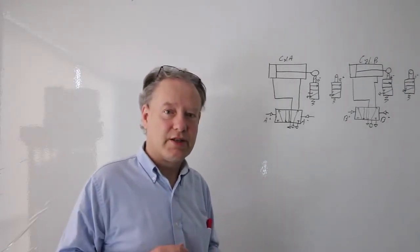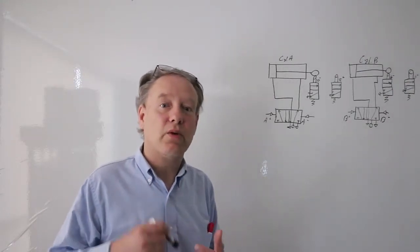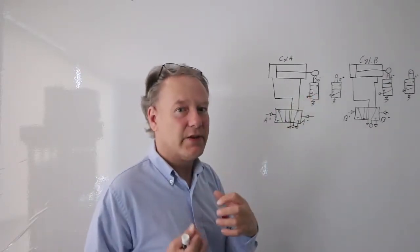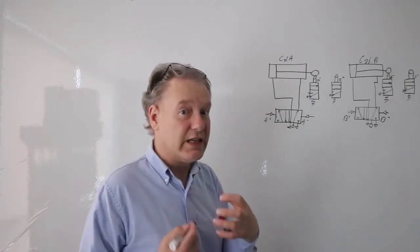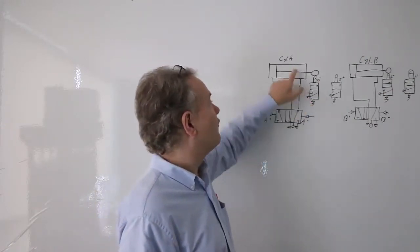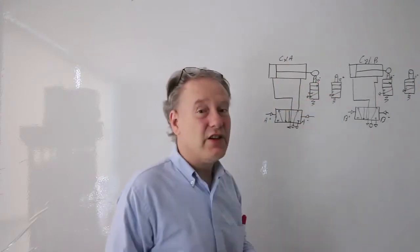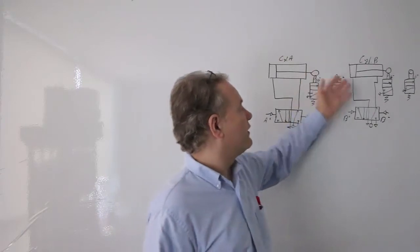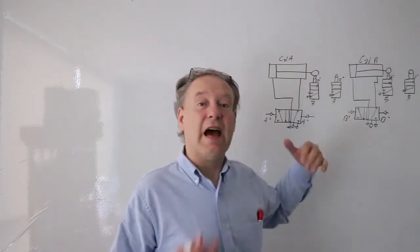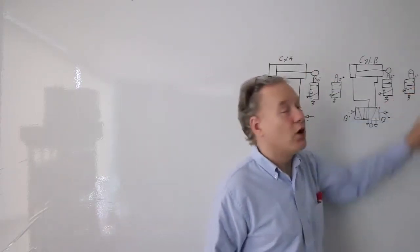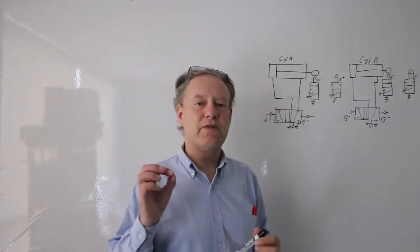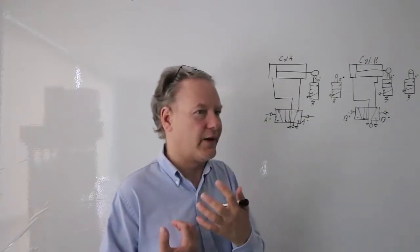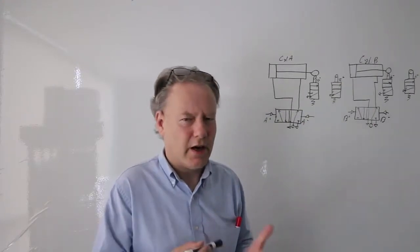The limit switches are represented by lowercase letters. That's the inside limit switch for cylinder A, so it's denoted with a lowercase a. For cylinder B, the outside limit switch is denoted with a lowercase b — more specifically B plus and B minus. Minus means retracted and plus means extended.